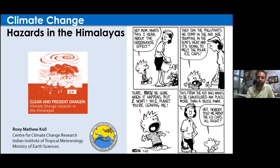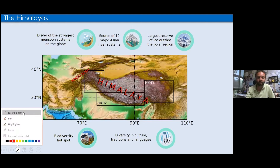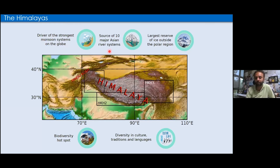The Himalayas are critically important. They are the driver of the strongest monsoon system on the globe — all agriculture and daily livelihoods depend on the monsoon, which is partly driven by the Himalayas. The Himalayas are a source of 10 major Asian river systems and the largest reserve of ice outside the polar regions, which is why they are called the 'Third Pole.' They are also a biodiversity hotspot with diversity in culture, tradition, and languages — all of which are now changing due to climate change.